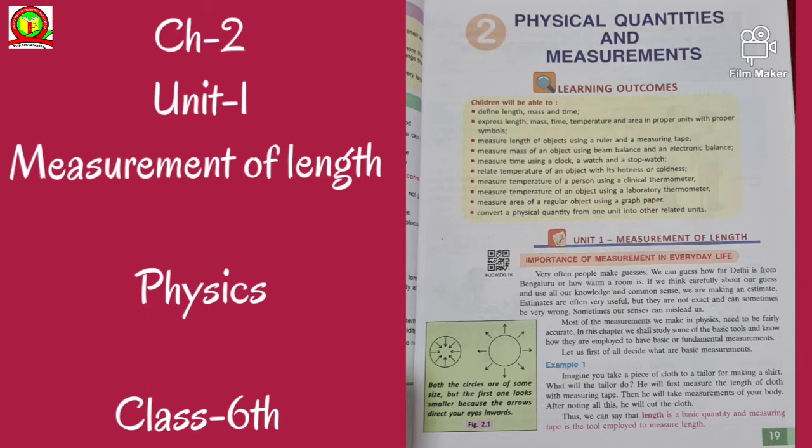Let us first of all decide what are basic measurements. Example one: imagine you take a piece of cloth to a tailor for making a shirt. What will the tailor do? He will first measure the length of cloth with measuring tape, then he will take measurements of your body. After noting all this he will cut the cloth. Thus we can say that length is a basic quantity and measuring tape is the tool employed to measure length. Here the tool is the measuring tape and the basic quantity is length.